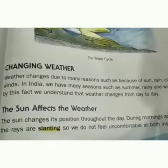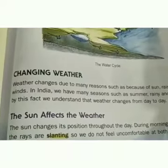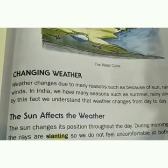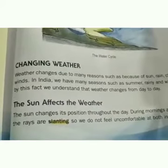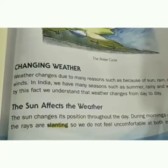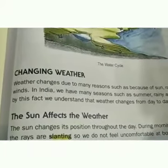Now we will discuss weather. Weather is the day-to-day or hour-to-hour changes in the atmosphere. For example, nowadays we can see rain falling, and after some time the sun comes out. Weather changes because of sun, rain, clouds, and winds. In India we have many seasons, such as spring, summer, and winter.